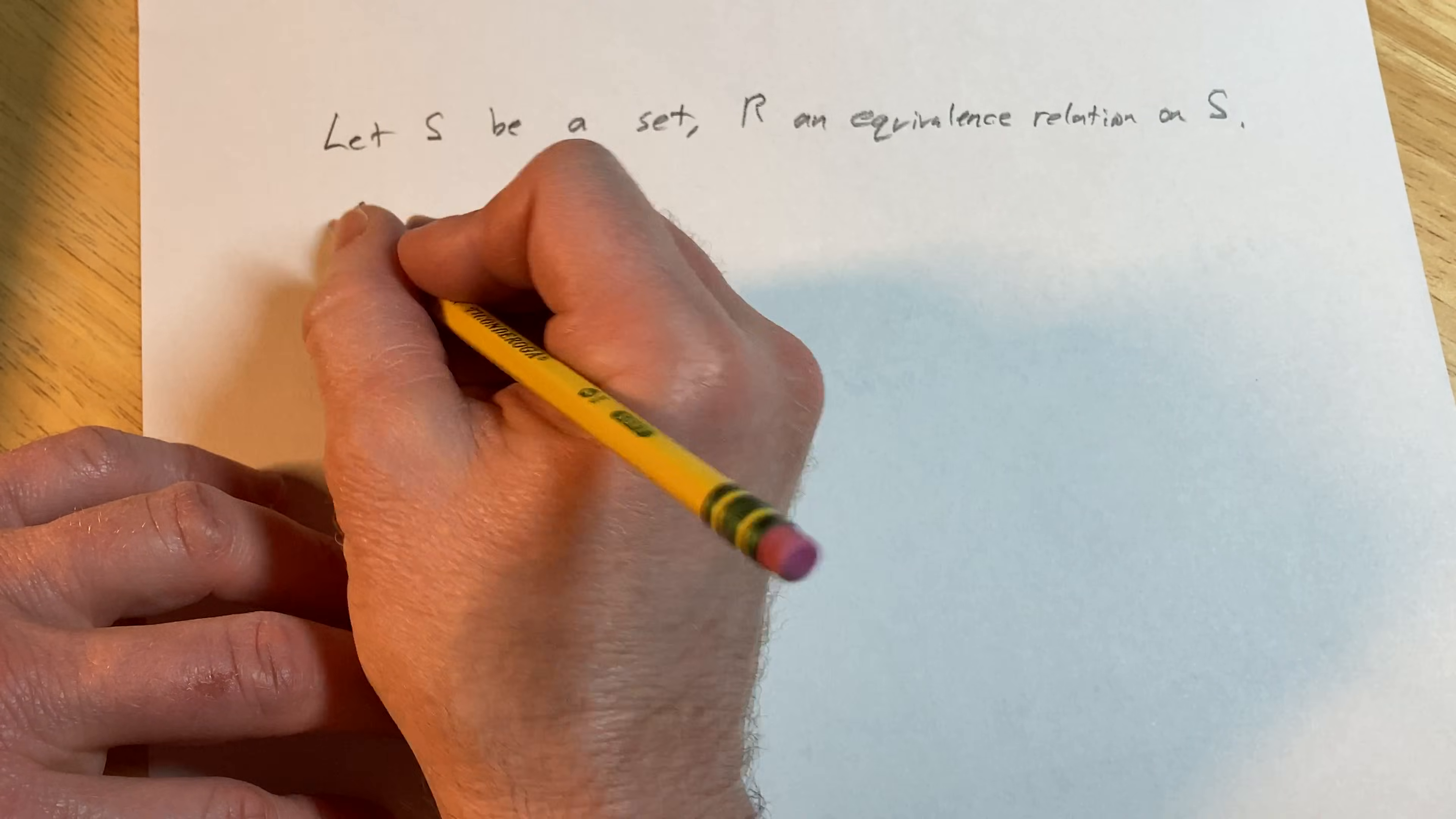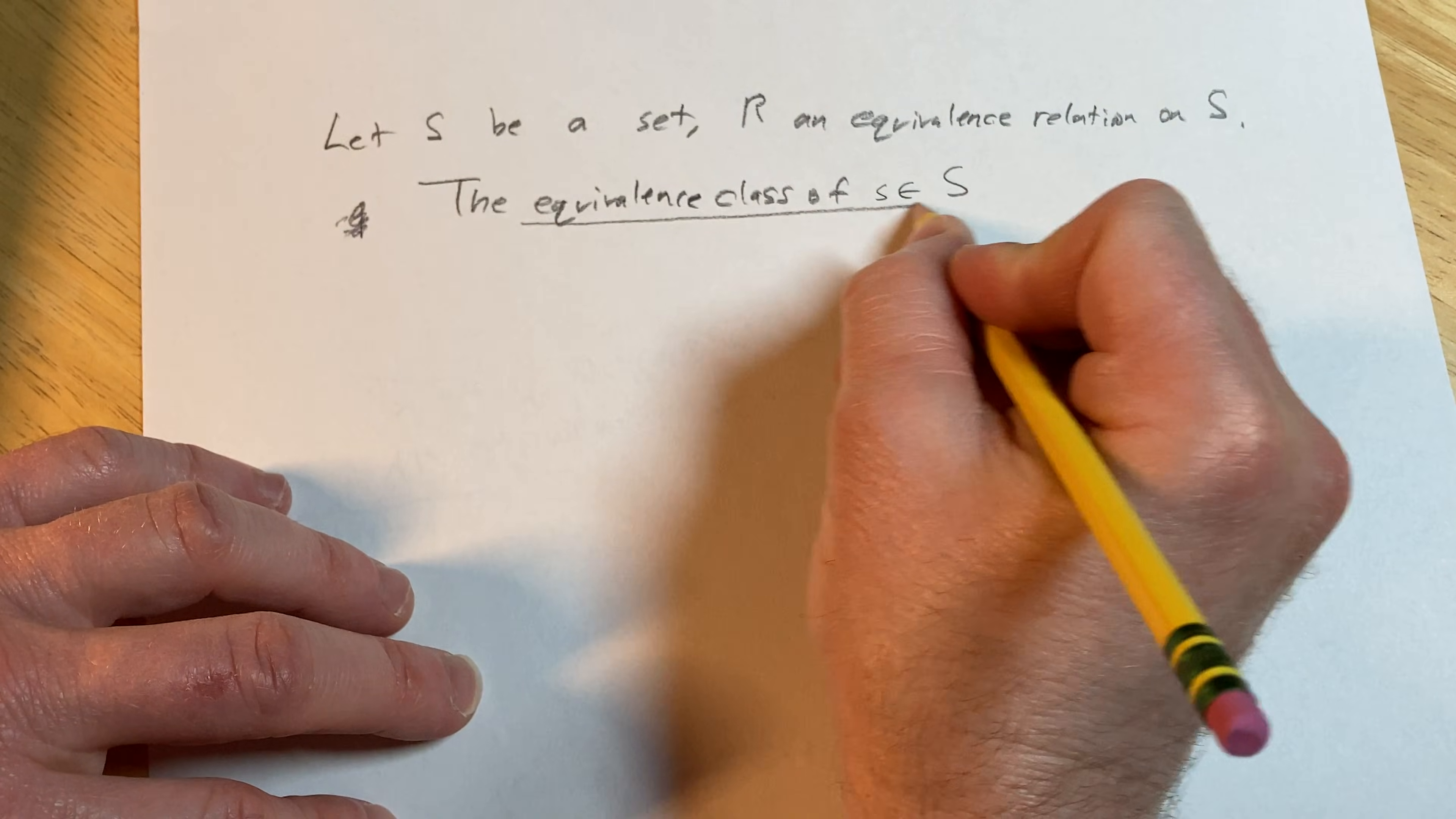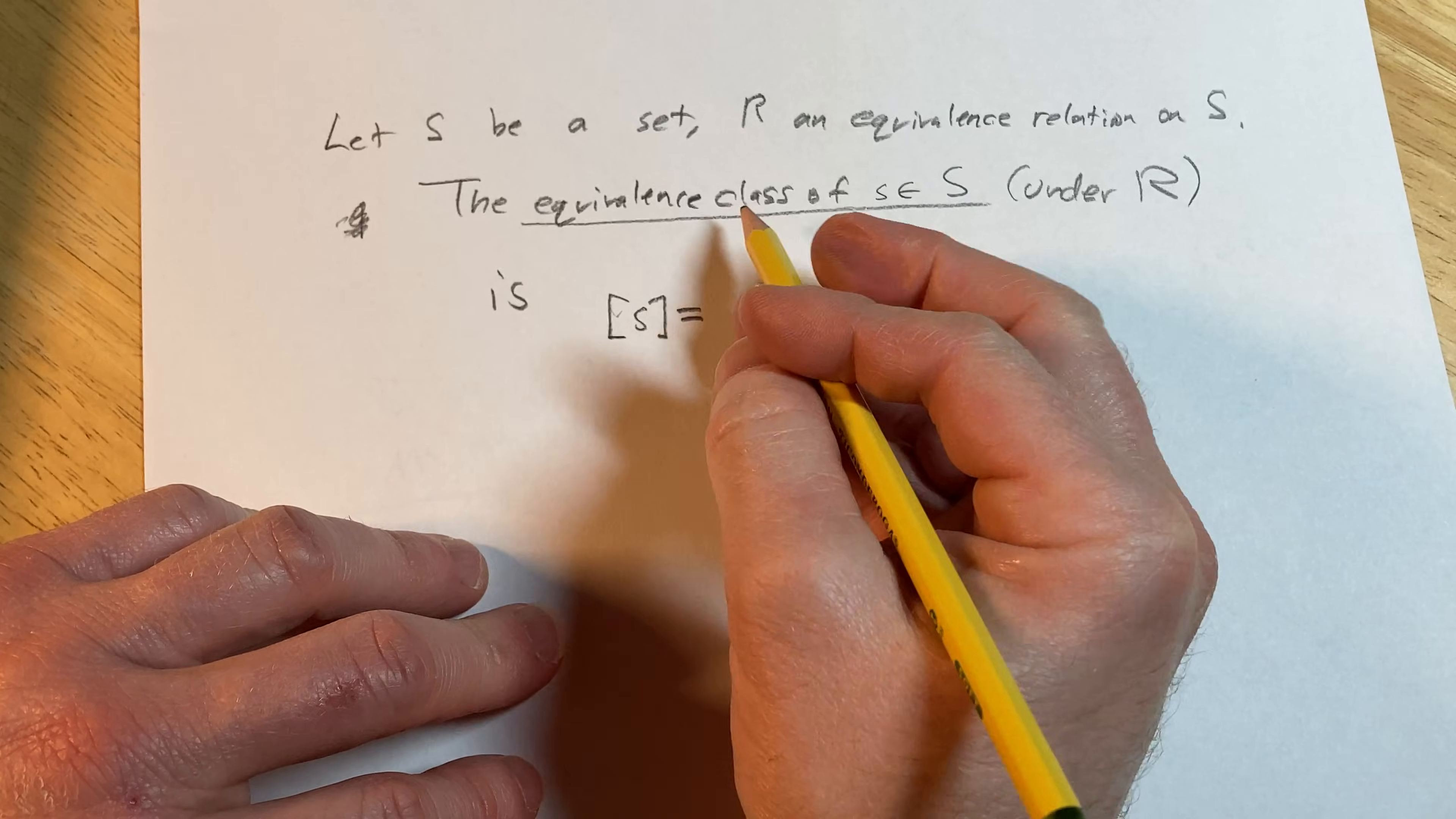Then we'll say the equivalence class of little s in S under R—well, there's different notation you can use. A very common notation is this bracket notation.